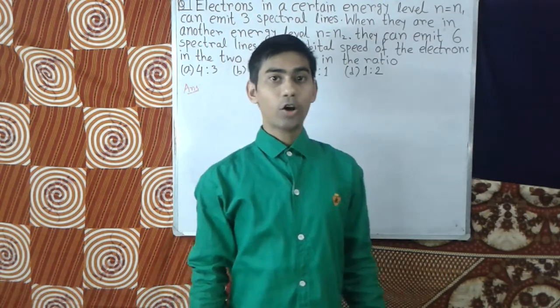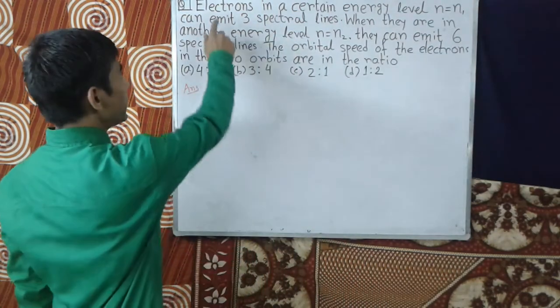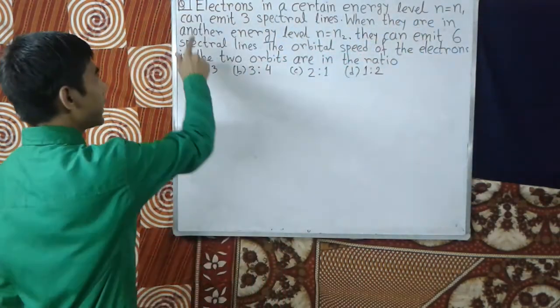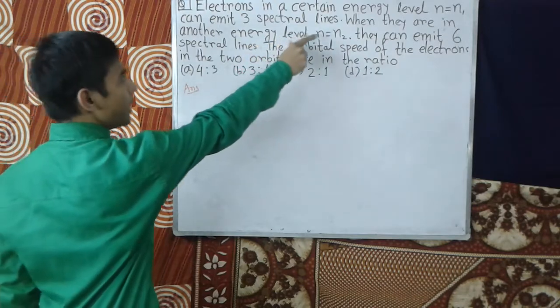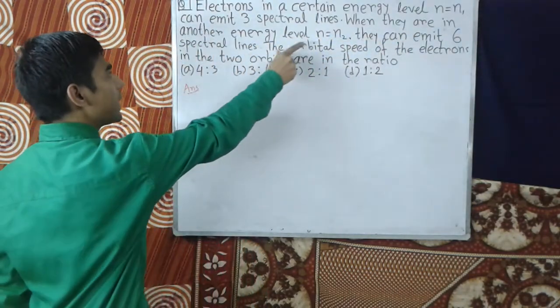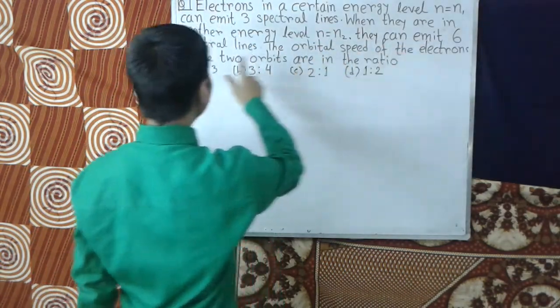The question is: electrons in a certain energy level n=n1 can emit three spectral lines. When they are in another energy level n=n2, they can emit six spectral lines.